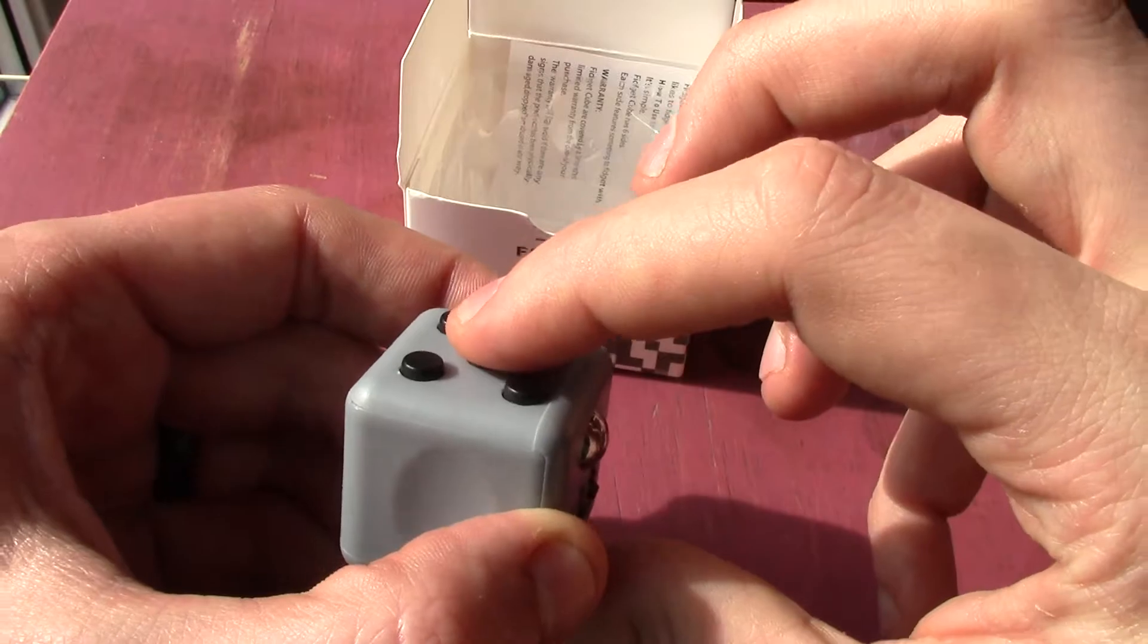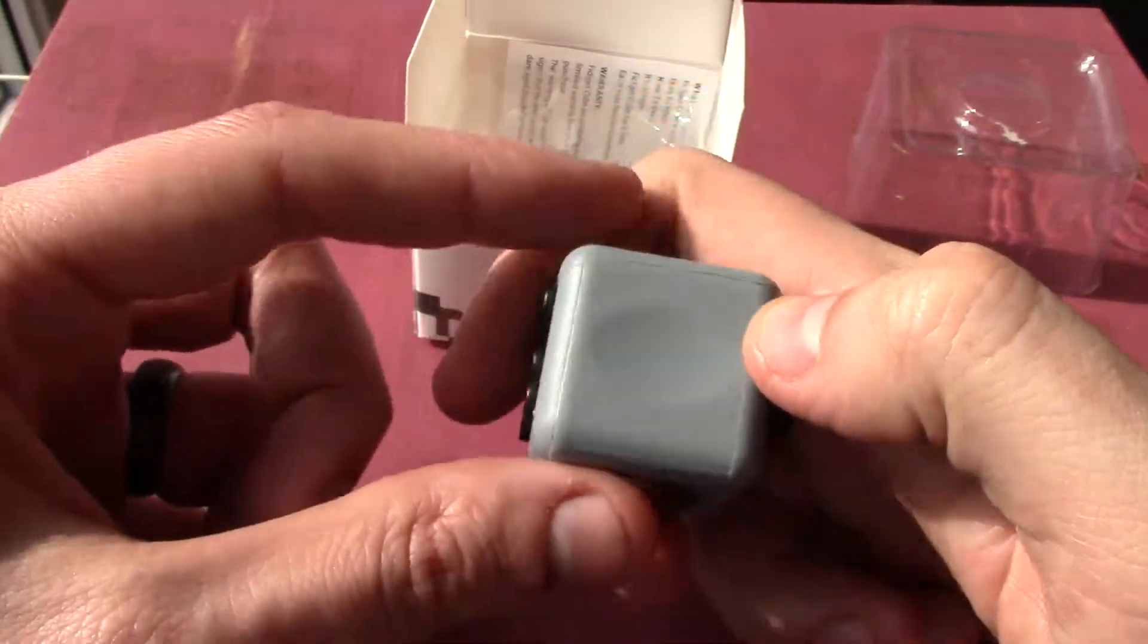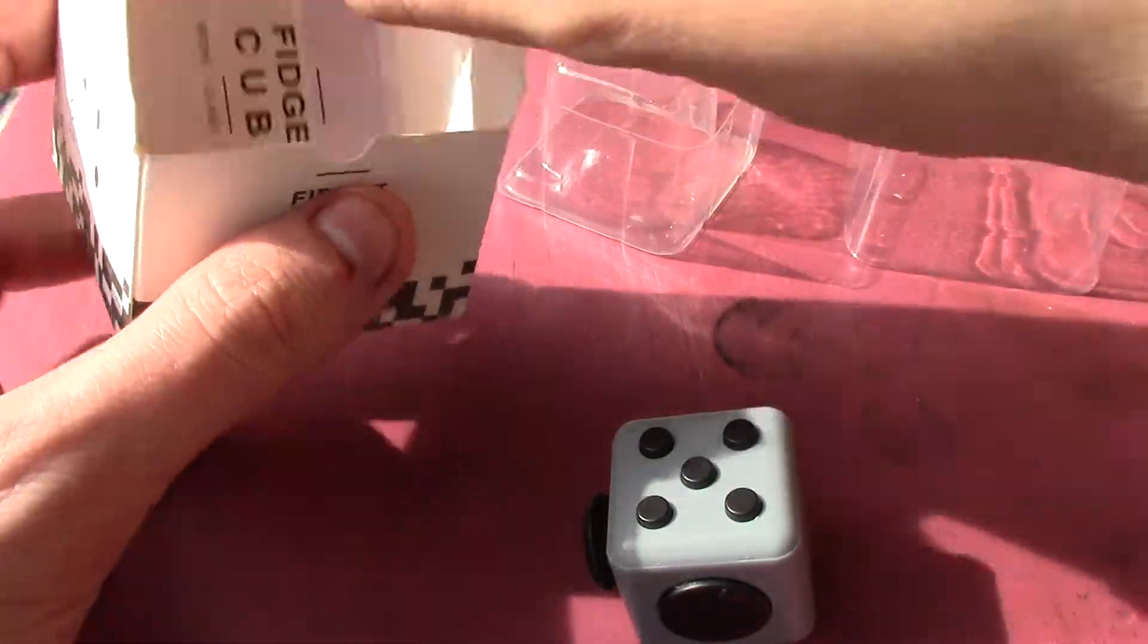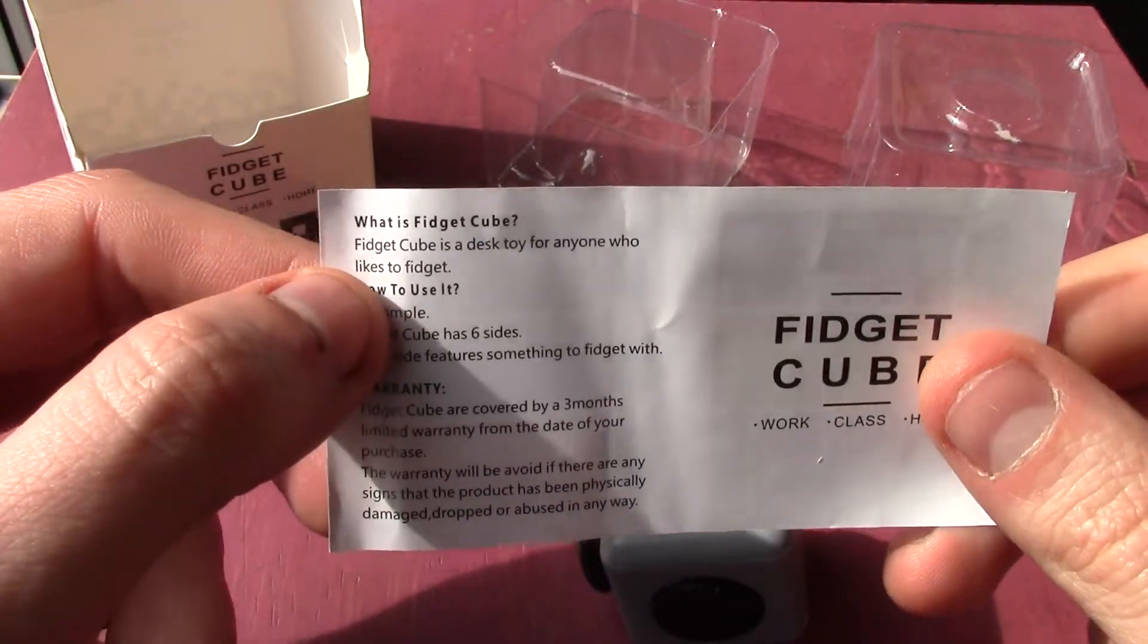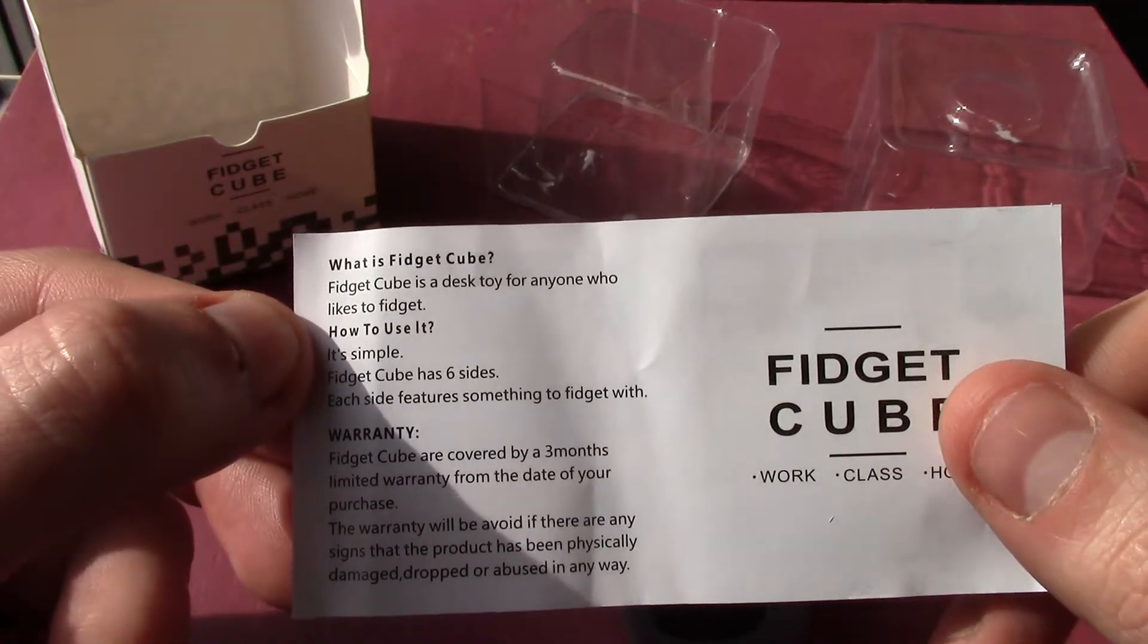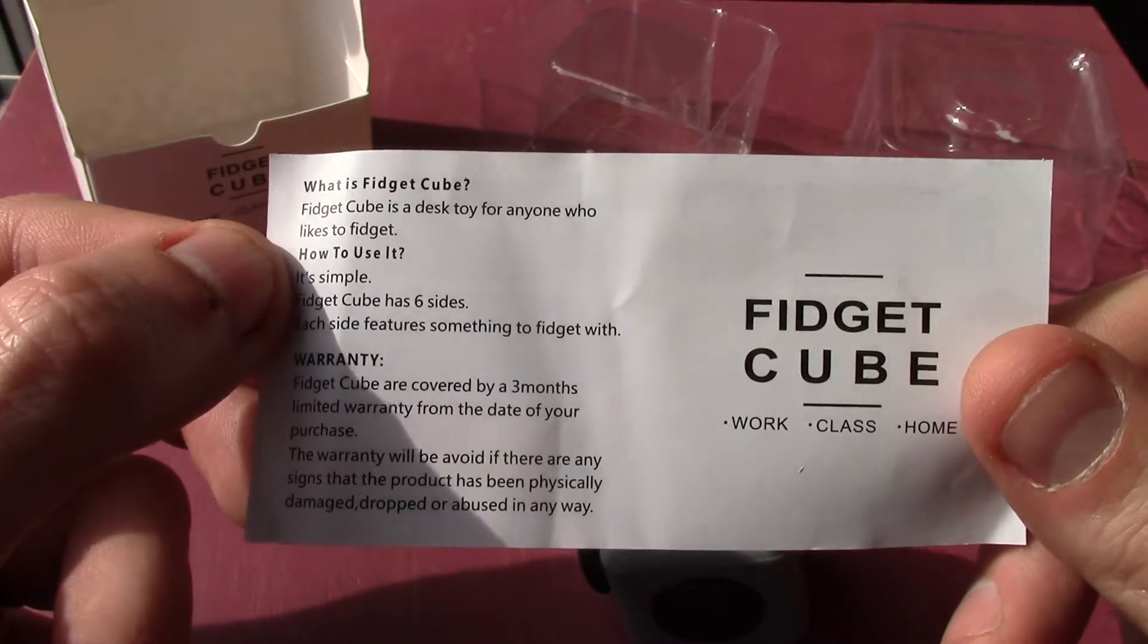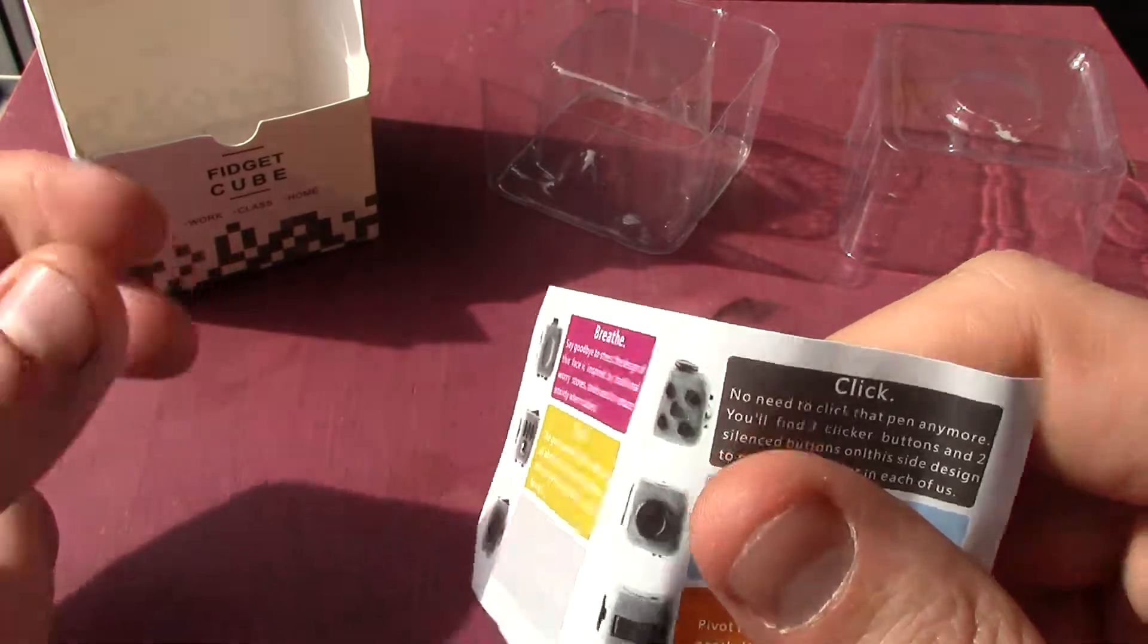There's buttons which press in, there's this bit which is just kind of a little groove. I'll get the leaflet out actually because the leaflet explains what each bit is. I'll read it out and show you all the other sides as well. So here we go.